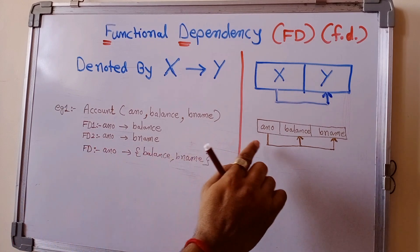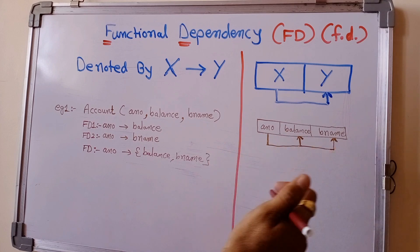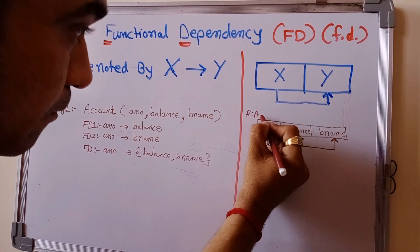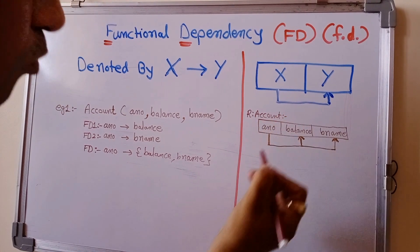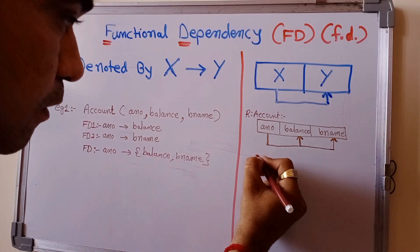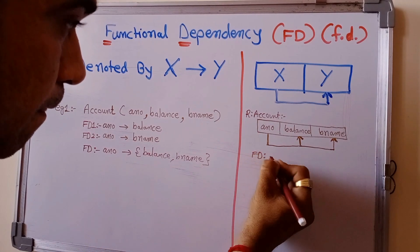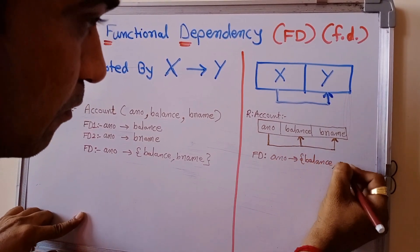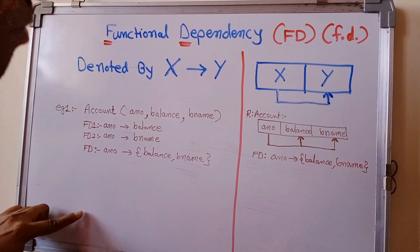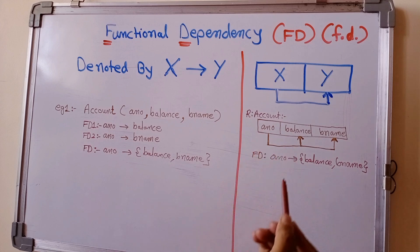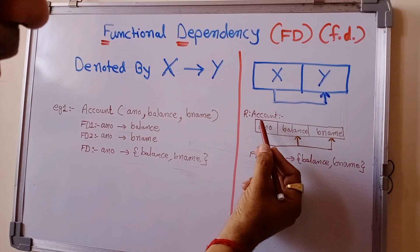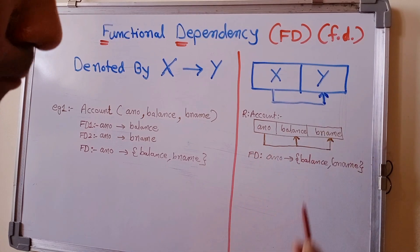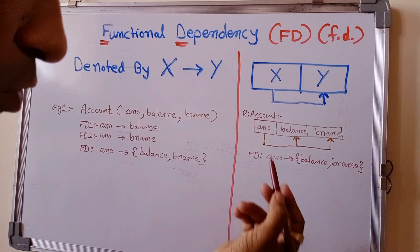This is how the functional dependency is shown in a figure. In our table R, which is the account table, account number determines balance and branch name. When drawing this figure, we draw an arrow from the determinant, and it points to the dependent attributes.